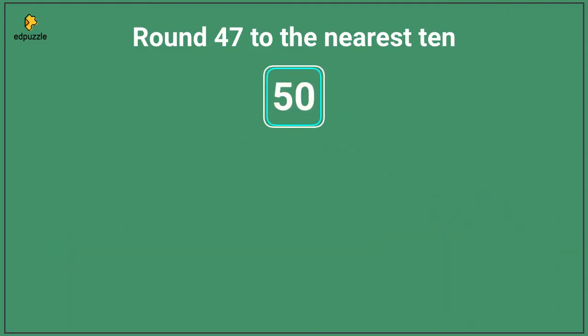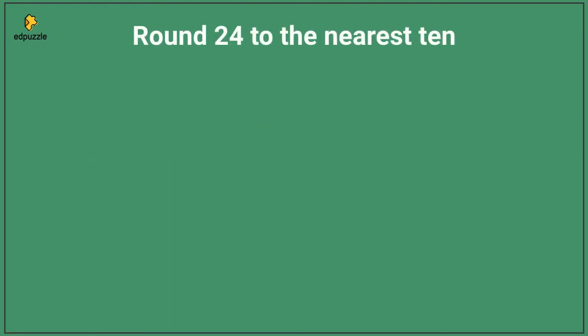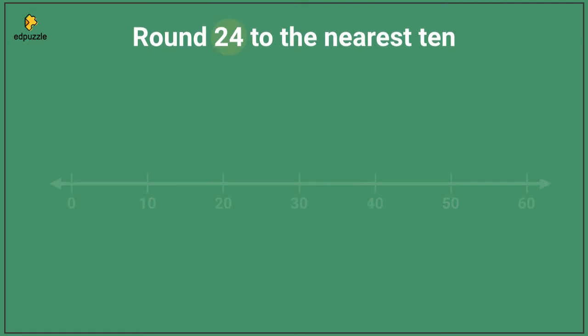I can visualize that this ball would roll towards the fifty. Therefore, forty-seven rounded to the nearest ten is fifty. Now let's do one of these together. Let's round twenty-four to the nearest ten. If I start by imagining a number line with tens on it, which two numbers is twenty-four between?